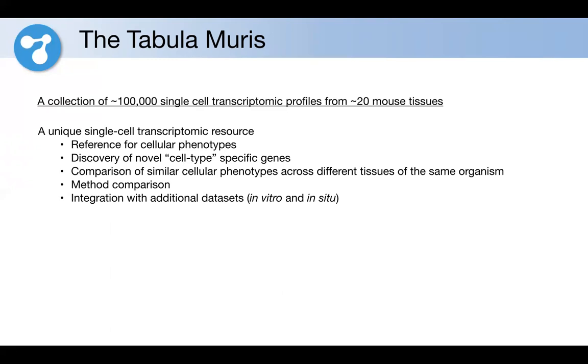What we think the Tabula Muris is going to be is a reference for cellular phenotypes. It can help in the discovery of cell type specific genes—and cell type is in brackets, so probably more cell states or cellular phenotypes would be more accurate. It would allow people to perform comparisons of such phenotypes across different tissues within the same organism. Since we use two different methods to collect our data, this dataset can be used to perform method comparison. Finally, we believe we can use this dataset together with additional datasets to start getting a better idea of what's happening down to the single cell level in these tissues, both in vitro and in situ.